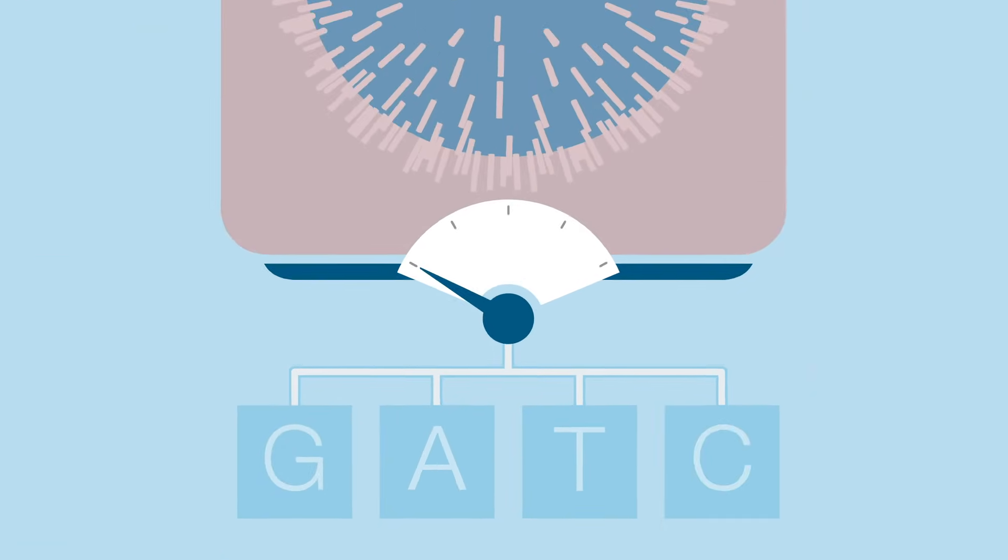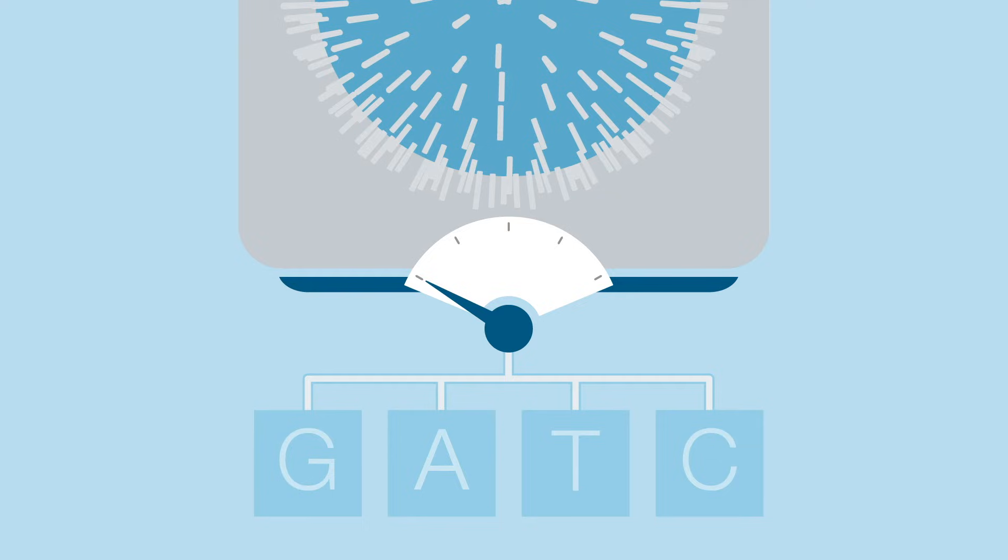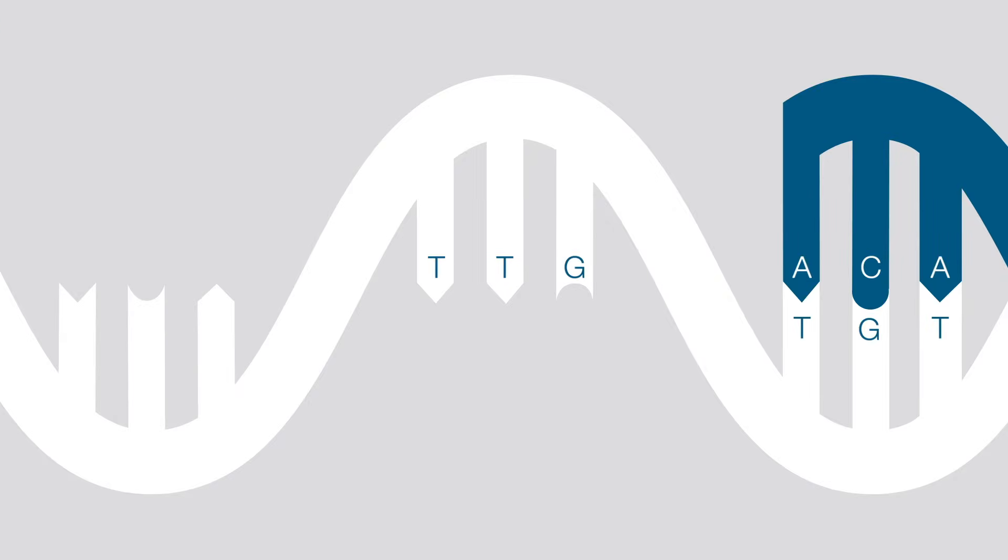In essence, each well works as the world's smallest pH meter. The process is repeated every 15 seconds with a different nucleotide washing over the chip, for example, cytosine.